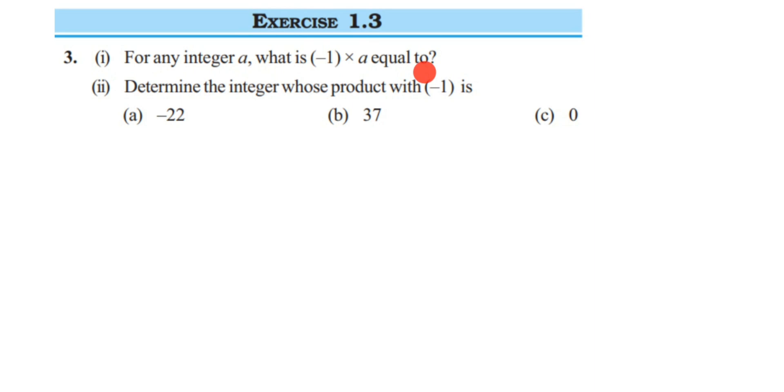And the second one is: determine the integer whose product with minus one is... so we have given three different integers we have to find out when you multiply with minus one. Now we will solve the first question. It's quite simple. They are saying that for any integer a, like here in place of a we can have any integer.